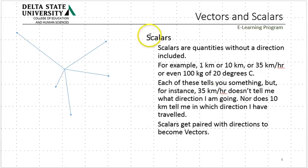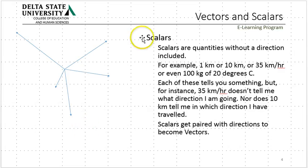We'll talk about scalars, which are simply numbers, and we'll talk about vectors, which have to have direction. You pair a scalar with a direction to get a vector. So if I tell you I walk 5 miles, then 3 miles, then 2 miles, and say nothing else, you don't have any idea how far I've gone. You need directions. I've walked 5 miles east, 3 miles west, 2 miles west — I've gone a total displacement of 0.